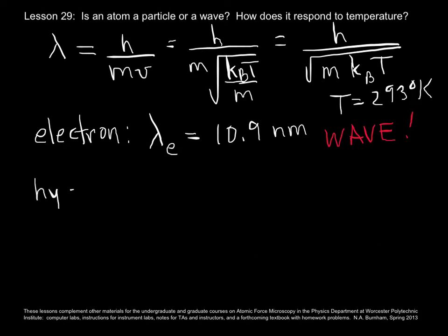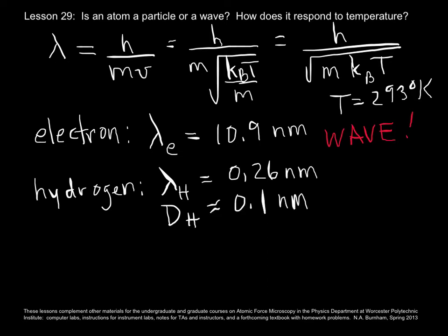Now how about hydrogen? You put in the numbers for hydrogen, and you get 0.26 nanometers for the wavelength. And its diameter is pretty close to 0.1 nanometers. So our criterion of if the wavelength is bigger than the diameter, means that hydrogen is a wave as well.